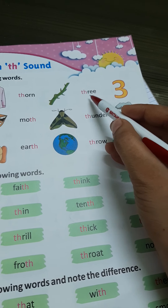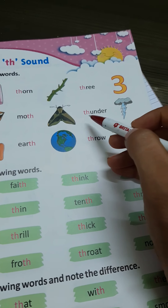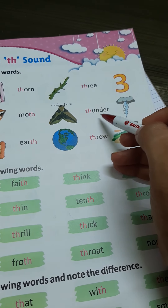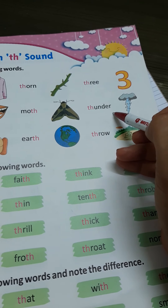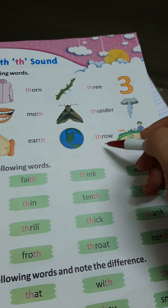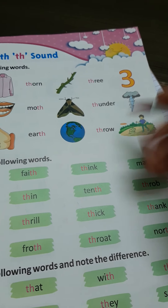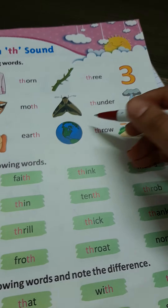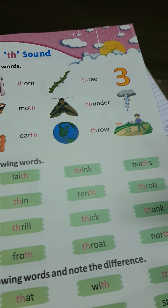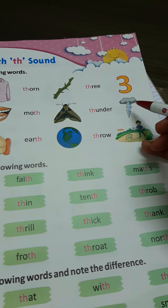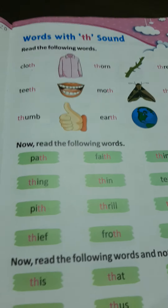TH-R-E-E, three. TH-U-N-D-E-R, thunder. T-H-R-O-W, throw. Throw मतलब क्या होता है? Thunder क्या होता है? देखिए, जब वो बादल गरजता है, वो जो बिजली चमकती है, उसको बोलते हैं, thunder.